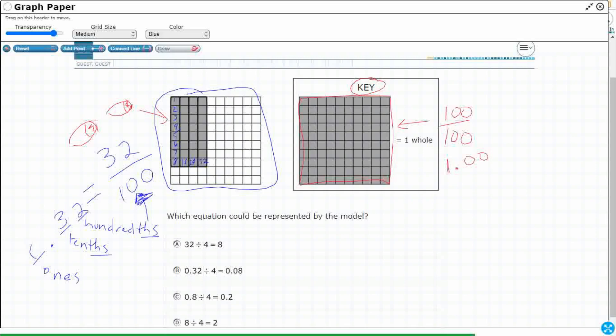So 32 hundredths is the same as 0.32. And we'll put a zero here just to keep it company. So those two equal each other. That was a huge thing that we learned in fourth grade. 0.32 equals 32 over 100. So now I've converted this fractional model to decimal form.